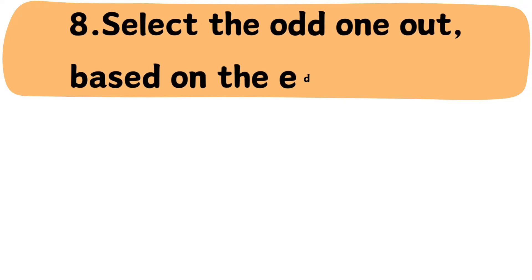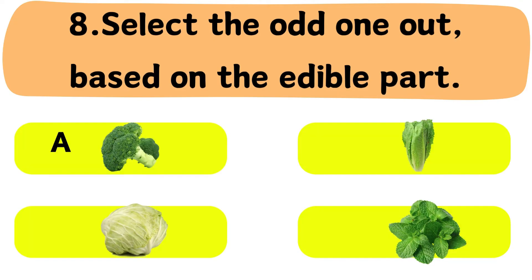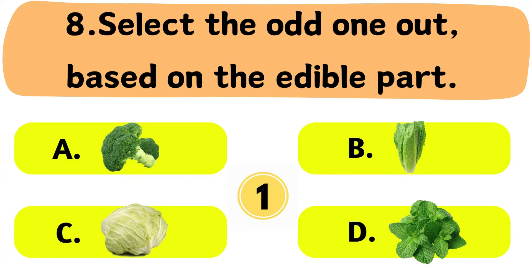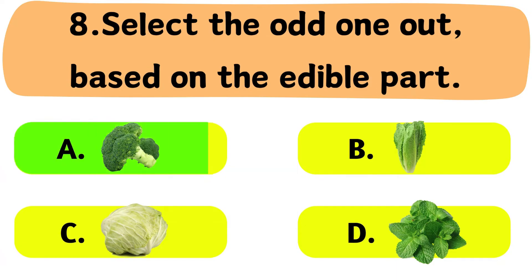Question No. 8: Select the odd one out based on the edible parts. The correct answer is Option A: Broccoli.